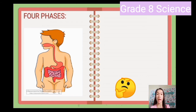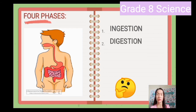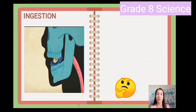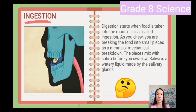Digestion has four phases: ingestion, digestion, absorption, and elimination. Digestion starts when food is taken into the mouth — this is called ingestion. As you chew, you are breaking the food into small pieces as a means of mechanical breakdown.